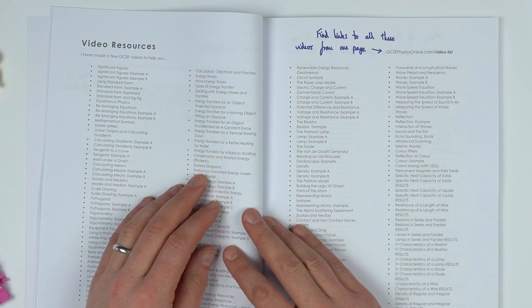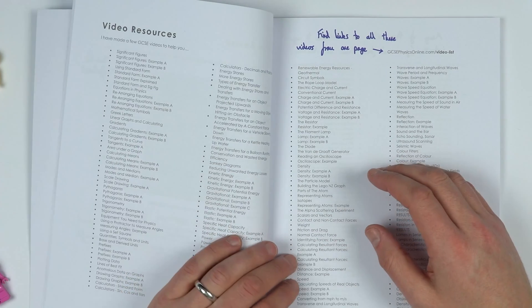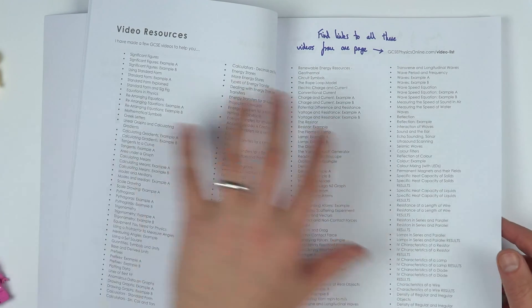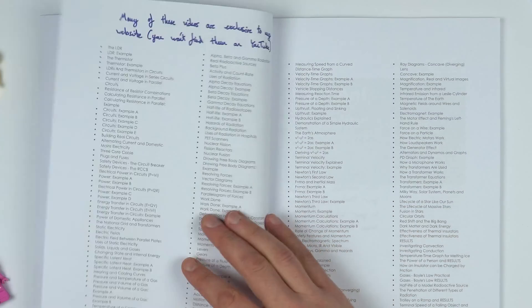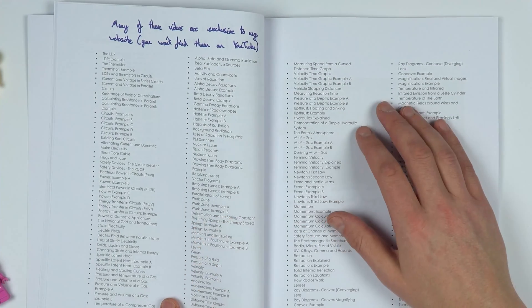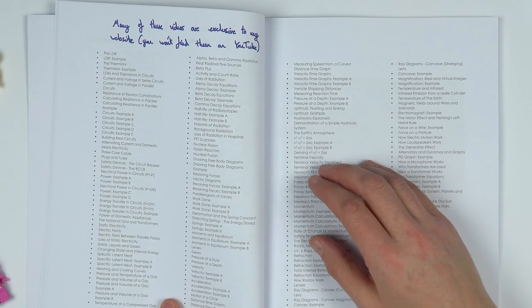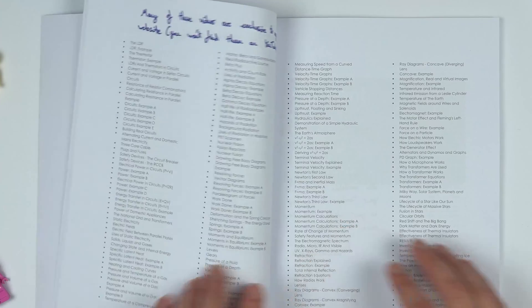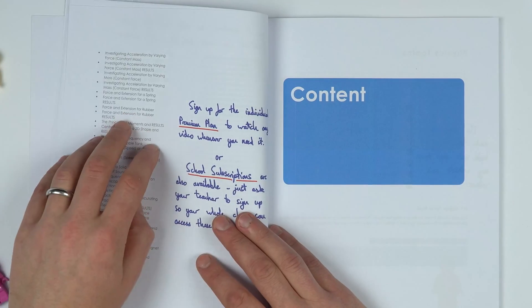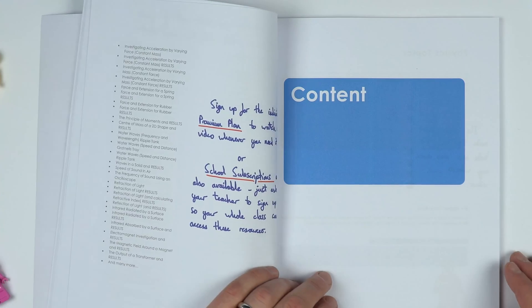In the guide I've got a link to all of the video resources you can find at GCSE Physics Online. These ones are all completely free to view, and if you have either a school subscription or an individual premium plan, you can access hundreds more videos that cover everything you could possibly need to know for the GCSE Physics course.